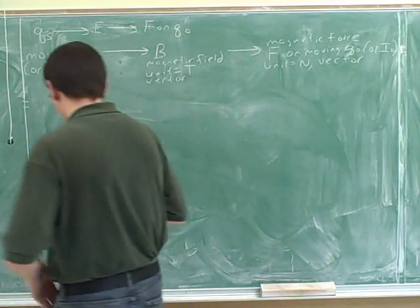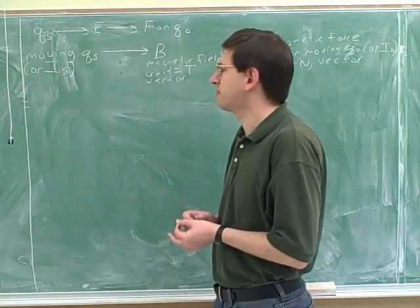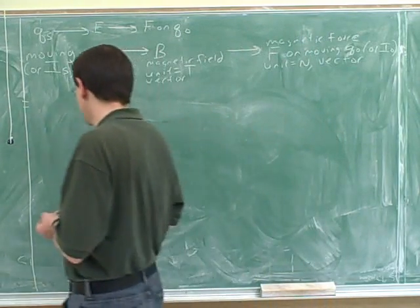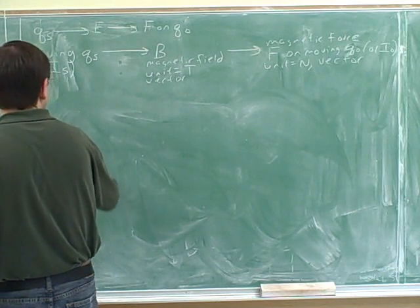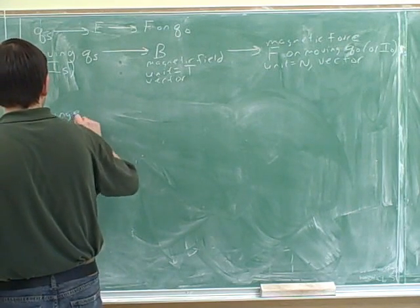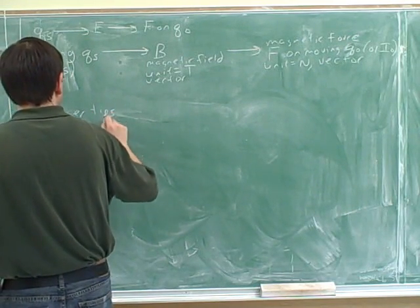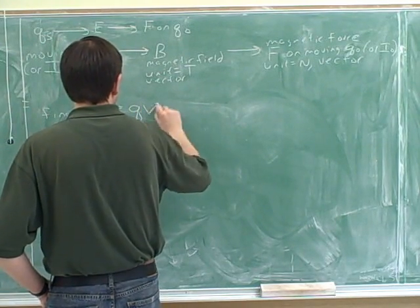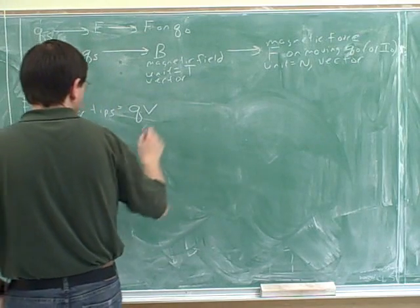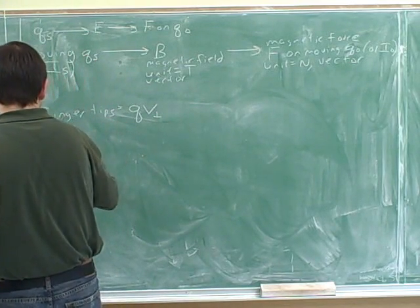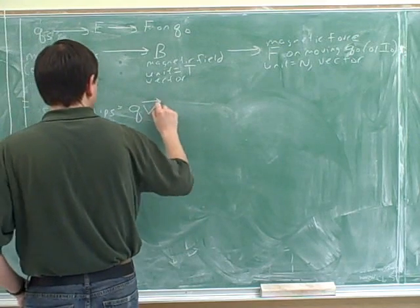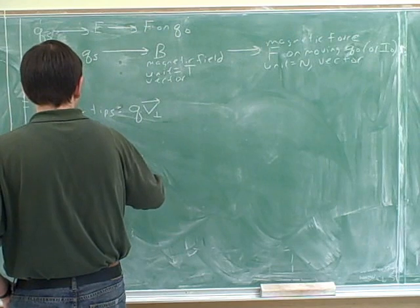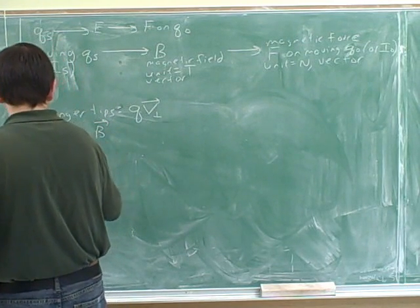The way to figure out directions for magnetism is to use things called right-hand rules. So we have to learn this right-hand rule.